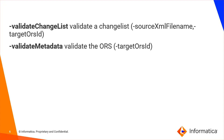The next two parameters are validate change list and validate metadata. The validate change list option will validate the applied changes — whatever change list you have created and applied to the target ORS. The validate metadata option is equivalent to performing a validate ORS in the MDM hub console. If you want to validate the ORS from the command line, you use this option.